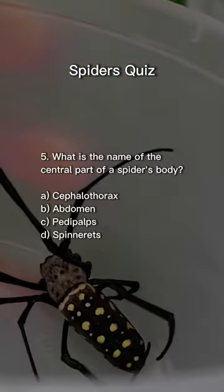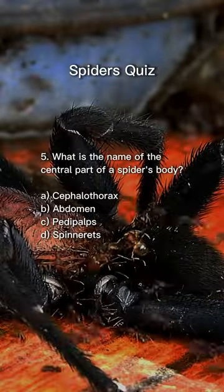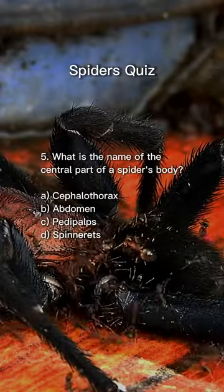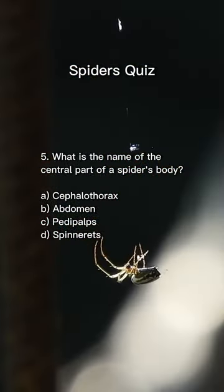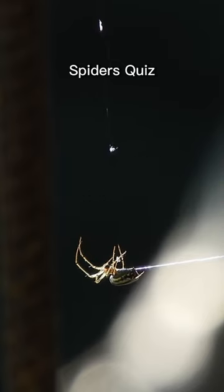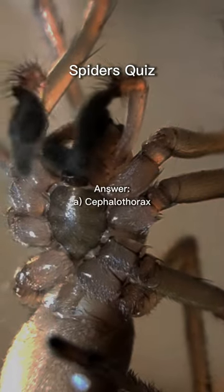5. What is the name of the central part of a spider's body? Answer: A. Cephalothorax.